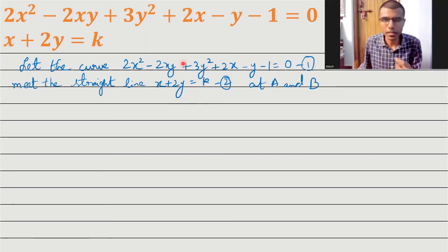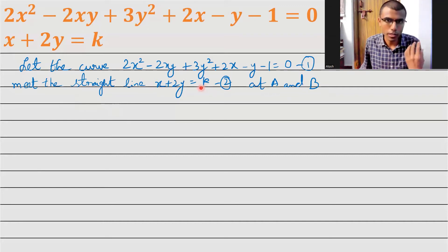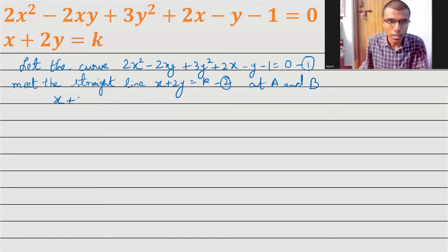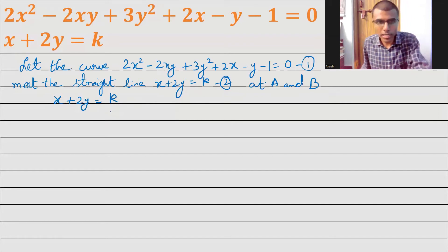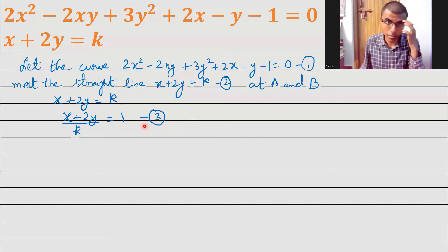The curve meets the straight line. Now listen carefully — I'm going to homogenize equation 1 with respect to equation 2 to get the equation of pair of lines OA and OB. Before that I need to convert this to a form I can homogenize. x plus 2y equals k — I want 1 on the right-hand side, so I divide by k to get x plus 2y divided by k equals 1. I'm going to mark this as equation 3.